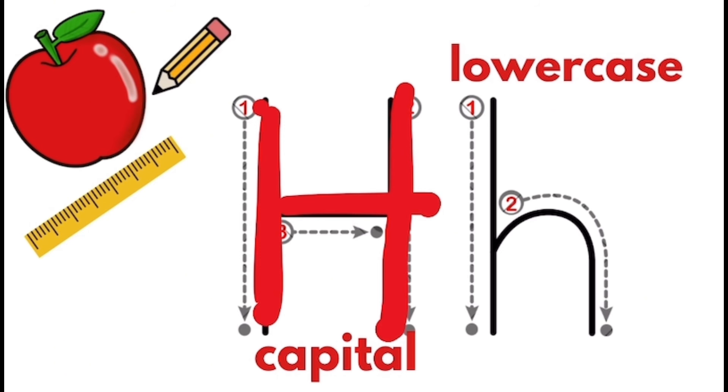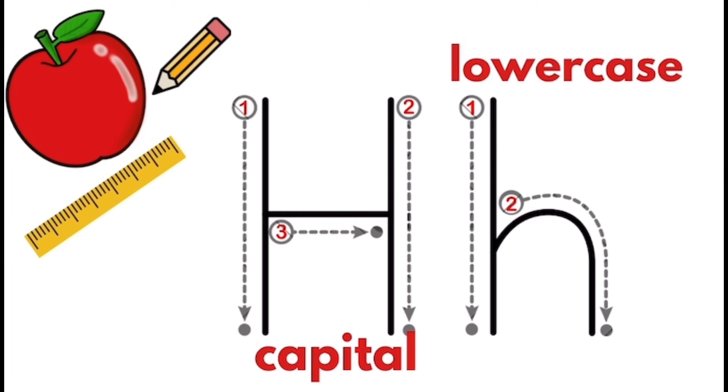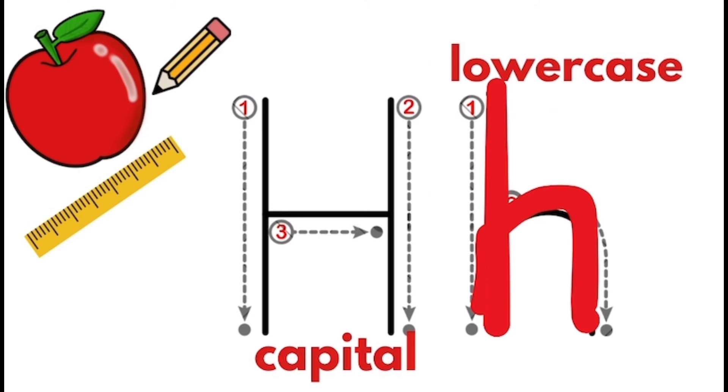Great job! You wrote a capital H. Now we will write a lowercase h. Draw a dot anywhere on your paper and write a line down and stop. Now go to the middle of the line and curve around to the right and stop.